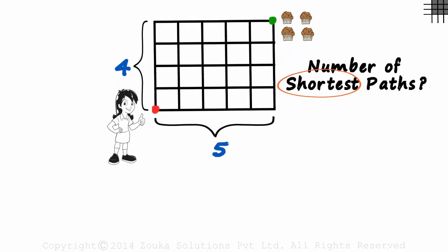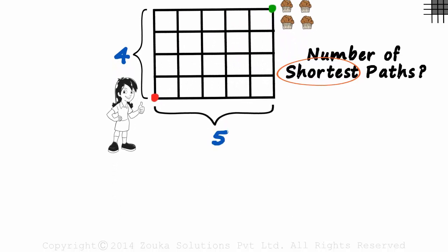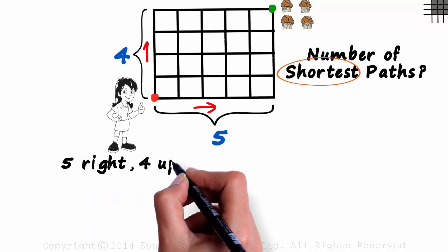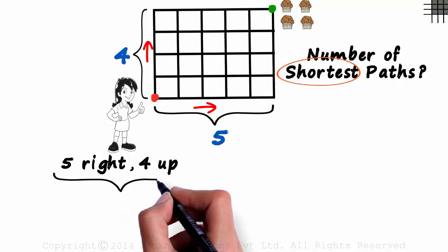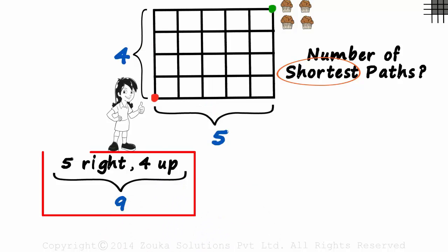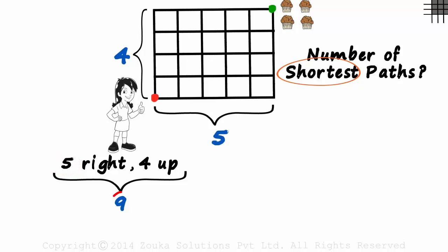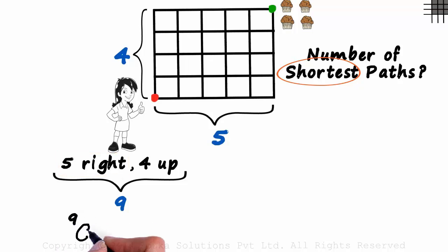Now let's move on to solving the problem. In every case we saw, Zara had to move five units to the right and four units up — the sum of these two is nine units. Out of the nine units Zara travels to reach the destination, five have to be rightwards. Out of the nine units for any shortest path, we have to select five which go to the right. So 9C5 will give us the number of shortest paths Zara can take to reach the destination.